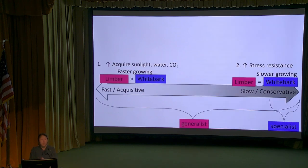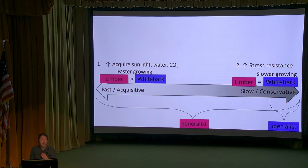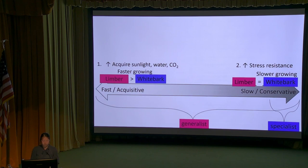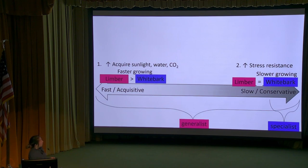Relating back to our framework: limber pine had a greater capacity to take up sunlight, water, and CO2 - traits promoting faster growth or these fast acquisitive traits. On the other end of the spectrum, whitebark pine and limber pine did not differ in cold, heat, and drought tolerances, suggesting both species exhibited slow or conservative traits. Limber pine as the generalist showed both fast and slow traits - both ends of the spectrum.